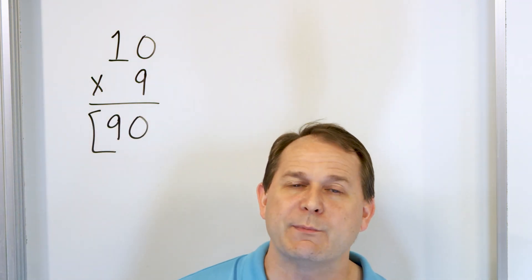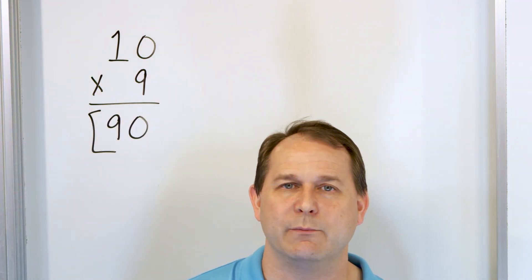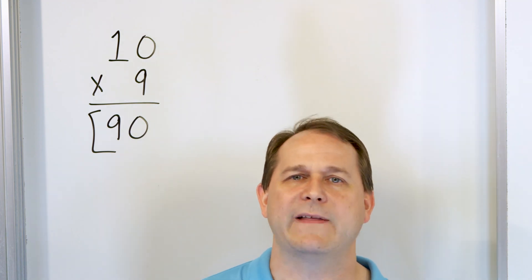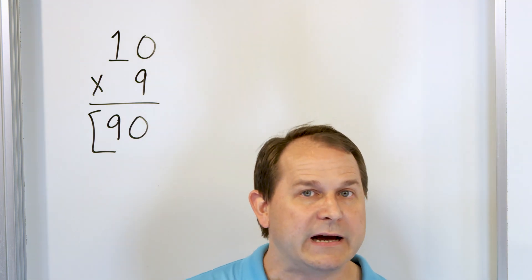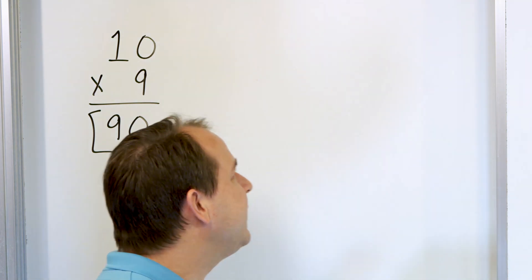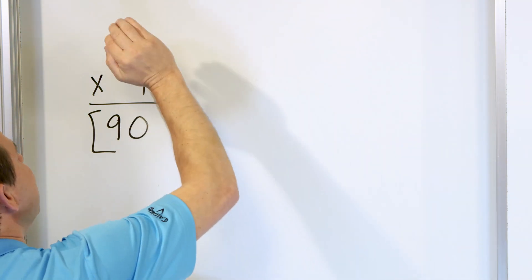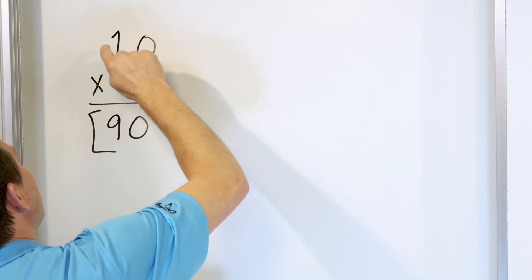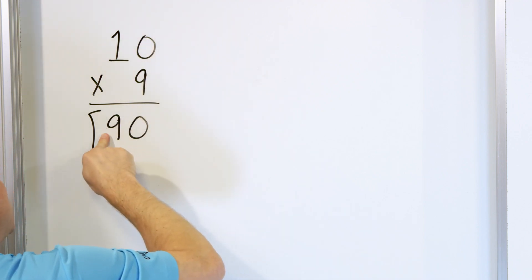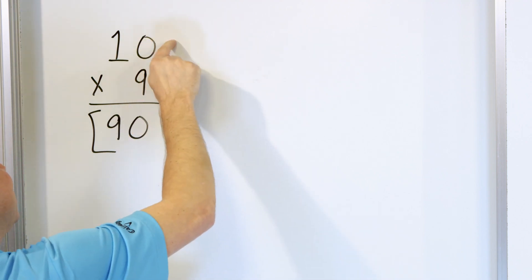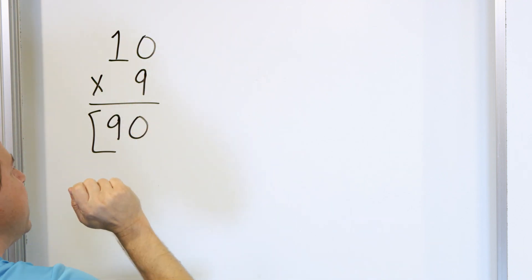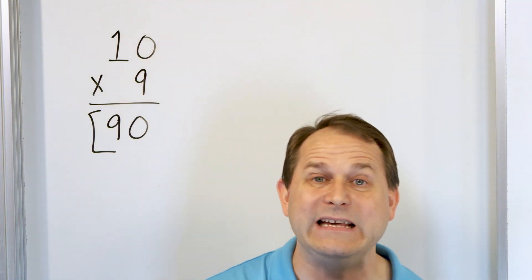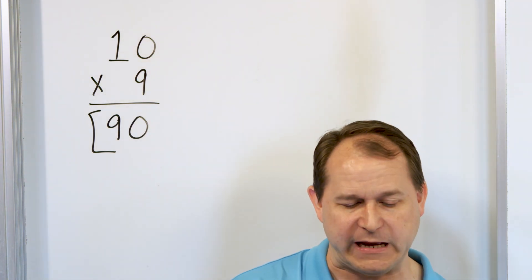We already know from our multiplication tables that 10 times 9 is 90. But by knowing that I can just pretend that zero isn't there, say 1 times 9 to get 9, and then stick the 0 back in — it really lets us multiply even bigger numbers together.